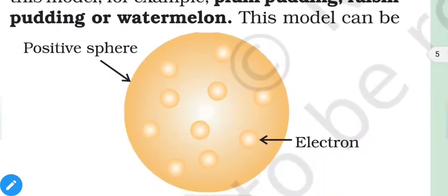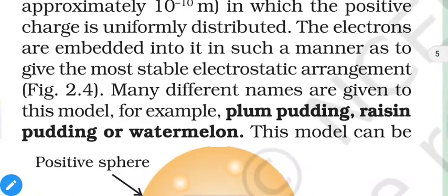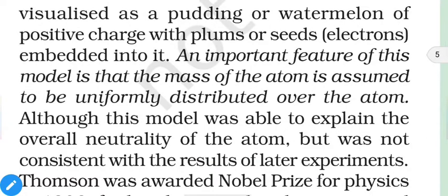The electrons are embedded in the positive sphere in such a manner as to give the most stable electrostatic arrangement — equally distributed throughout the whole region. This is similar to a plum pudding, raisin pudding, or more familiarly a watermelon: just like seeds present in a watermelon, the seeds represent electrons and the whole watermelon represents the positive sphere. This model is able to explain overall neutrality — why atoms are neutral — but has other issues.